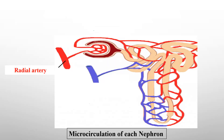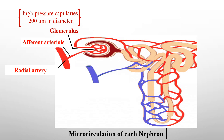The radial artery gives rise to the afferent arteriole that enters the nephron. The afferent arteriole, within the Bowman's capsule, divides to form a capillary bed called the glomerulus. The glomerulus is a tuft of high pressure capillaries about 200 micrometers in diameter. The glomerular capillaries unite to form a second arteriole called the efferent arteriole.